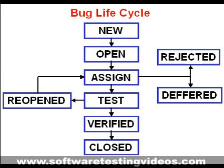The different states of a bug can be summarized as: new, open, assigned, test, verified, deferred, re-opened, rejected, and closed.